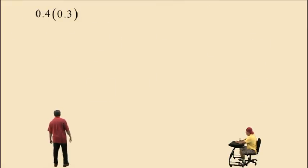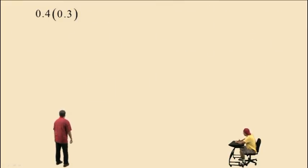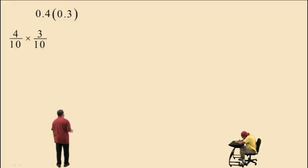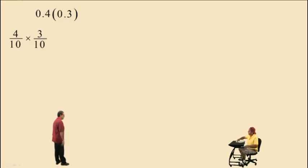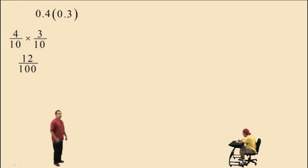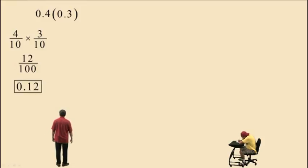Let's perform some multiplication. Four tenths times three tenths. Let's first convert our decimals to fractions. We have four tenths times three tenths. How do we multiply fractions, Charlie? Straight across the top, straight across the bottom. So you get twelve over a hundred. Writing that as a decimal: zero point one two — that's twelve hundredths.